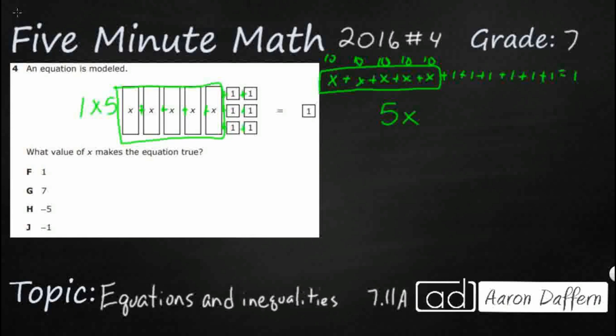We're going to do the same thing with our ones. Let's just add the ones: one, two, three, four, five, six. So this is actually how you show 5x plus 6, and then we have our 1 on the other side. They just didn't give this to us in equation form — they gave it in this visual form. So we've got 5x plus 6 equals 1.